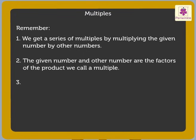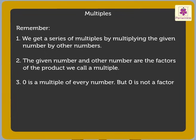3. 0 is a multiple of every number. But 0 is not a factor of any number except 0.